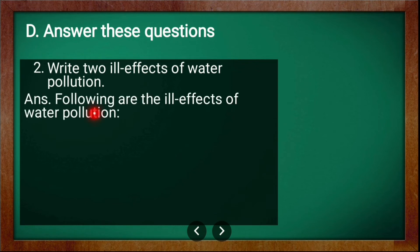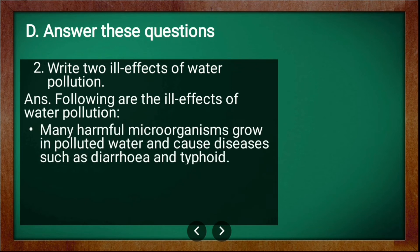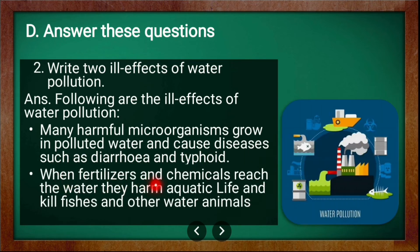Second long answer question: write two ill effects of water pollution. Many harmful microorganisms grow in polluted water and cause diseases such as diarrhea and typhoid. When fertilizers and chemicals reach the water, they harm aquatic life and kill fish and other water animals. These are some ill effects of water pollution.